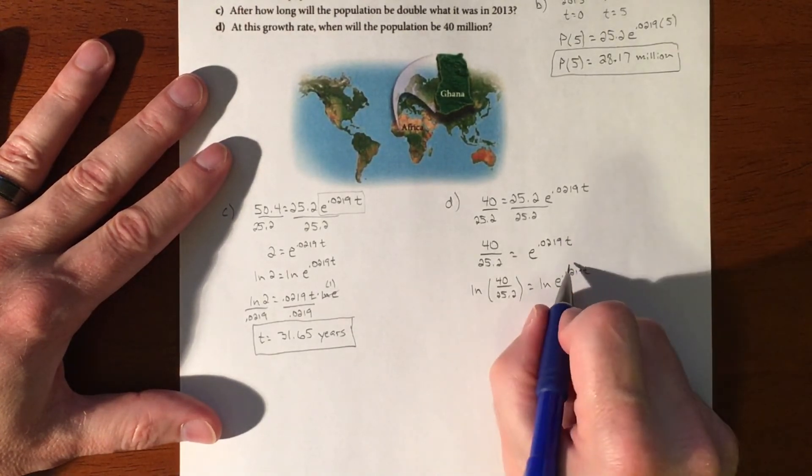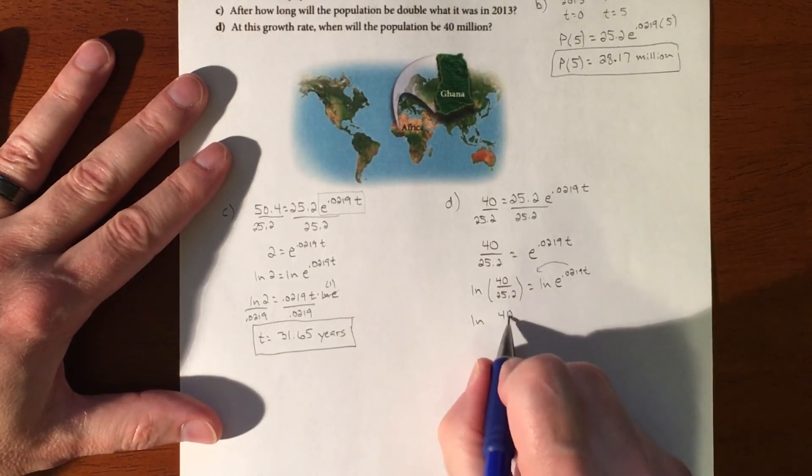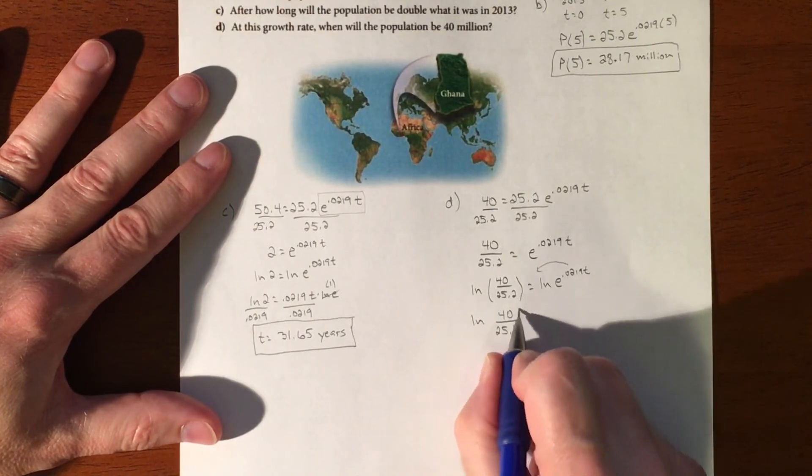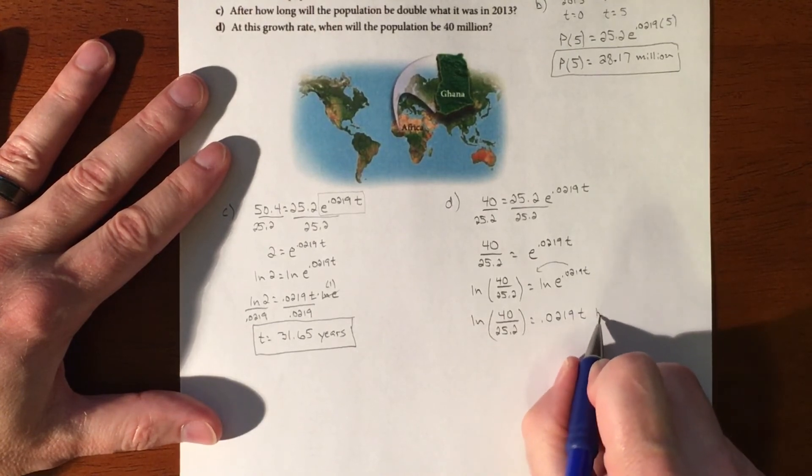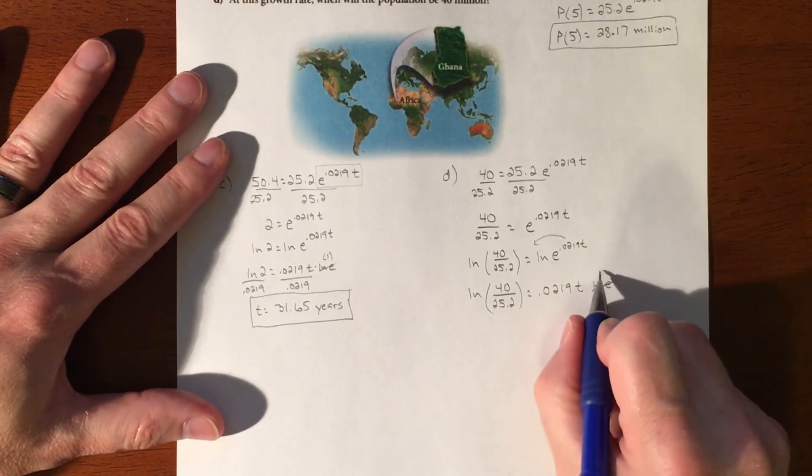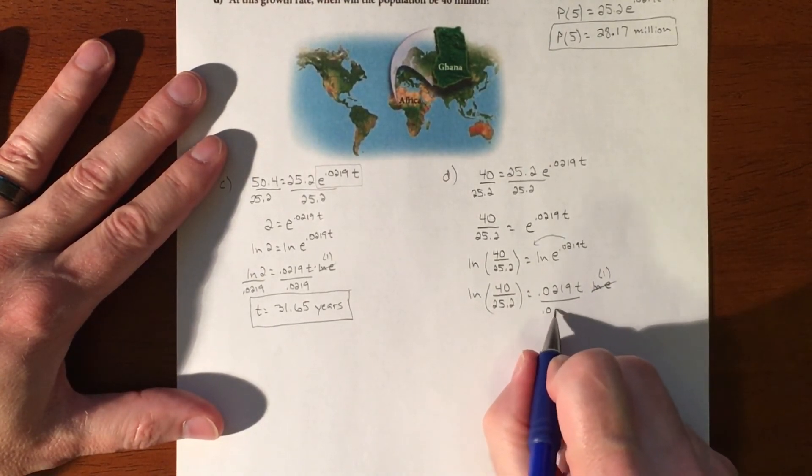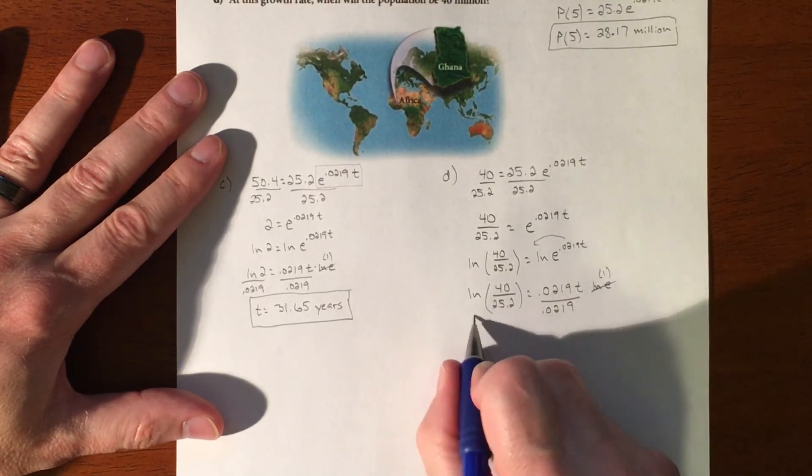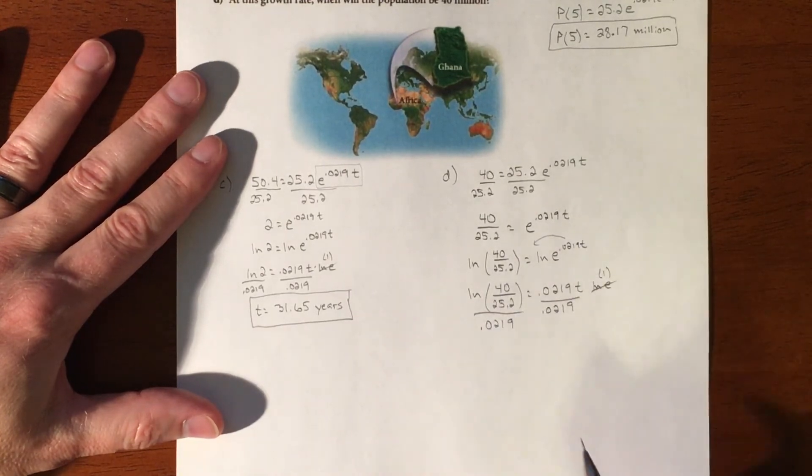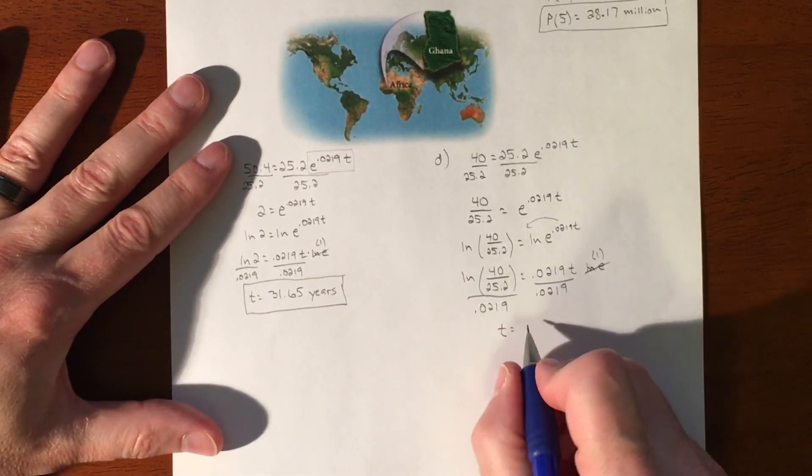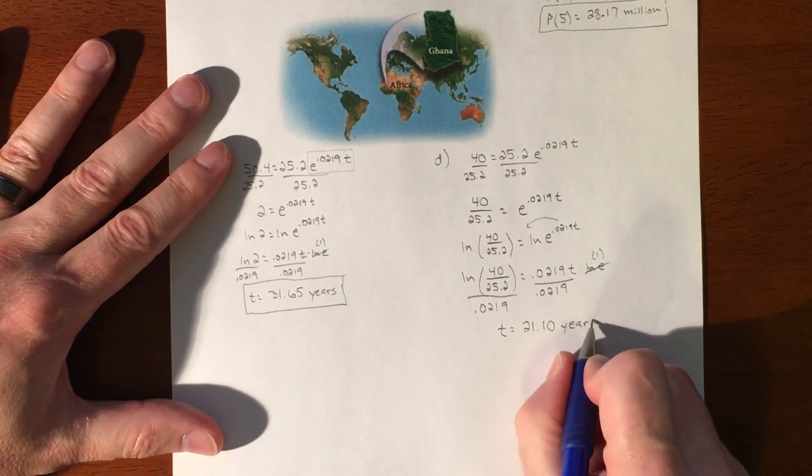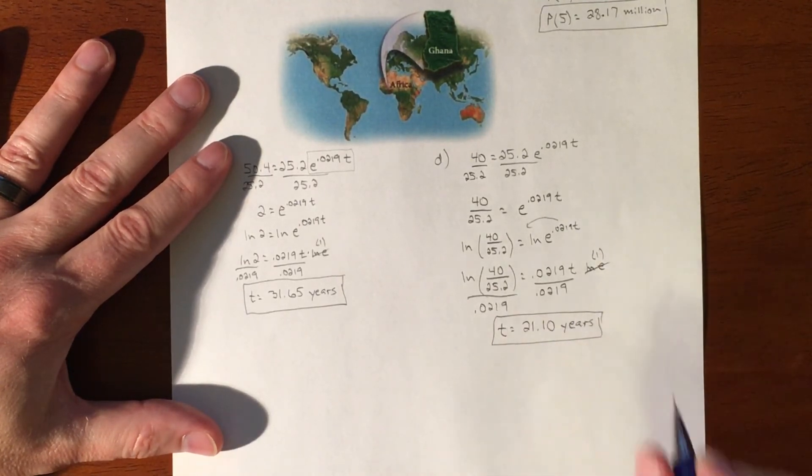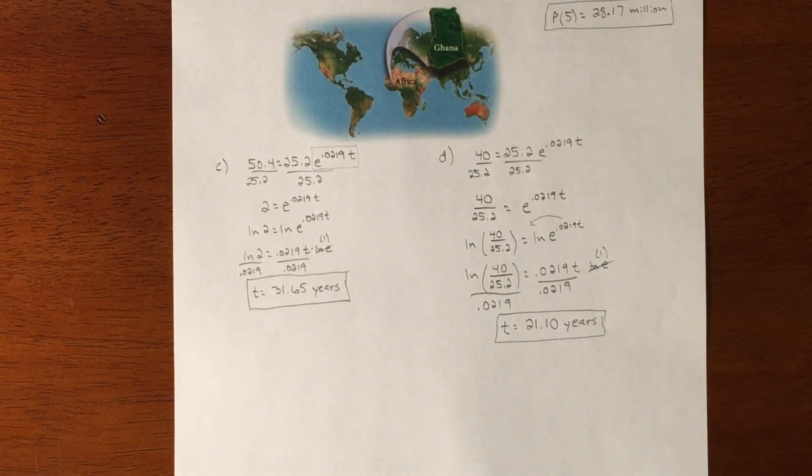Okay, so we'll log both sides. The reason we log both sides is so this exponent can go in front. So natural log of 40 divided by 25.2 equals 0.0219 T times the natural log of e. And just like before, this piece is going to go away because that simplifies to one. We again divide by 0.0219. And then just be careful on how you're typing that into the calculator. You should get roughly 21.10 years. And that was one example of using exponential growth and solving and finding populations and finding years it takes to hit certain thresholds.